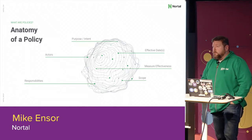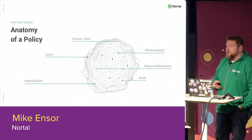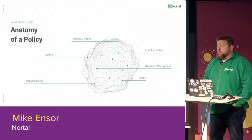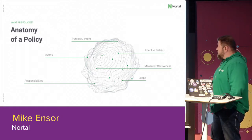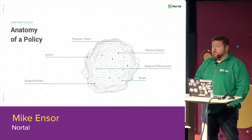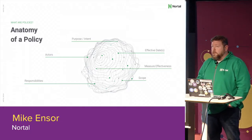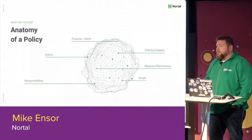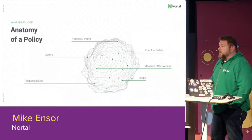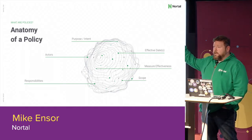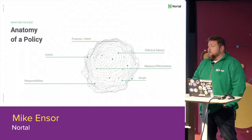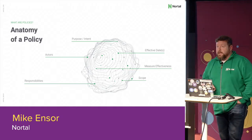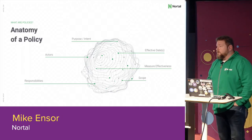The anatomy of a policy generally has about six attributes required to define a good policy. First is purpose or intent - what are you doing this for? Then actors - who are the primary, secondary, maybe tertiary participants? Talk about responsibilities of each person in a policy. Policies should be bounded by some sort of a date with an effective date. You need some way to measure effectiveness - if you can't measure it, it's not a policy, it's a hope and a dream. And you need a defined scope or context.